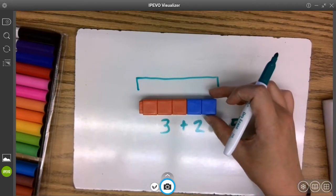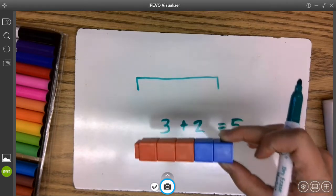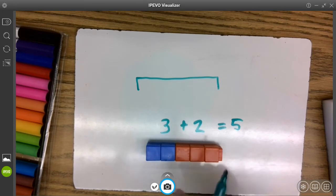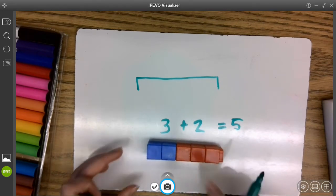Watch what happens, though. Now, if I take this stick I created and I flip it, it no longer shows three and two. Instead, it shows two plus three.